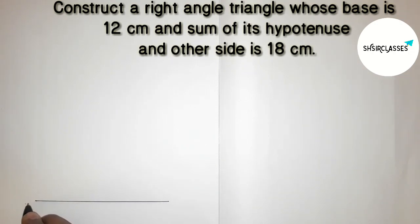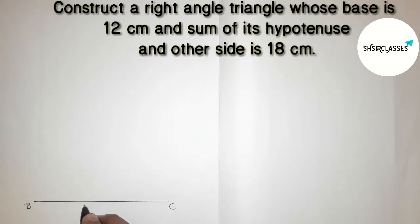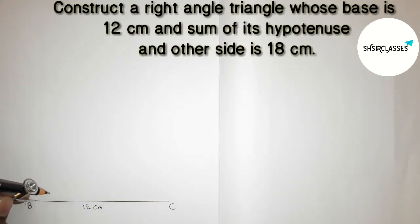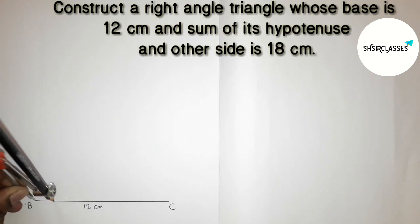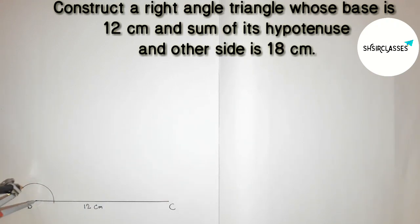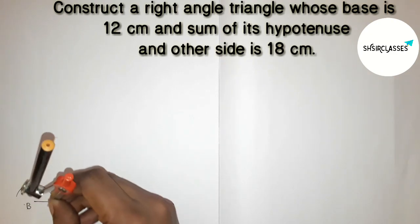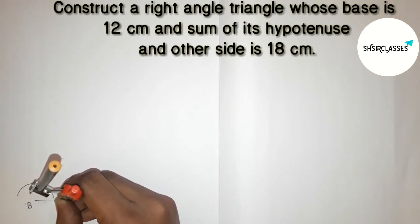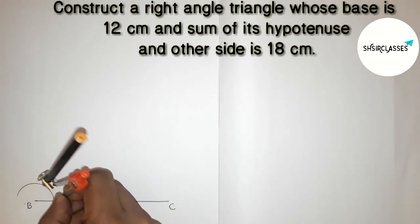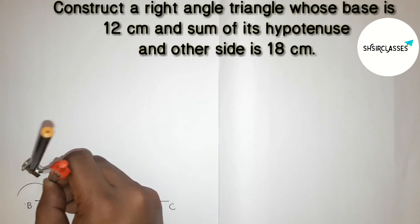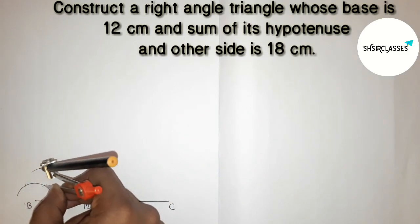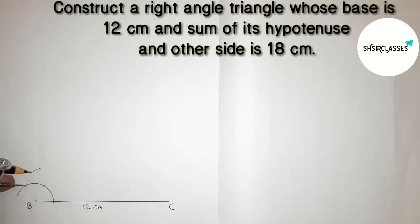Taking point B and point C, so BC equals 12 centimeter. Next, drawing a 90 degree angle at point B. Putting the compass on point B and taking any length, drawing an arc. Again putting the compass and cutting arcs with the same length to construct the right angle.